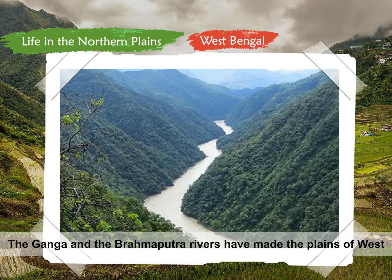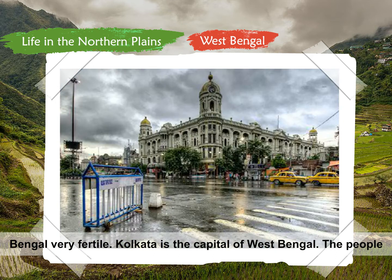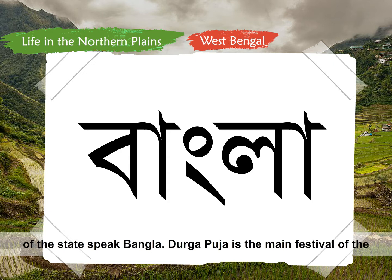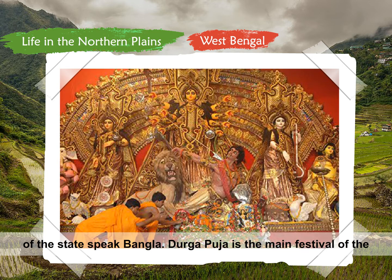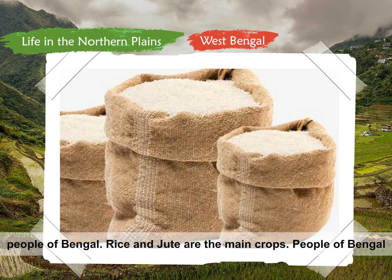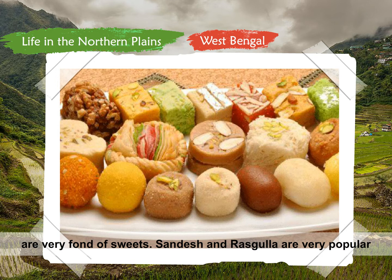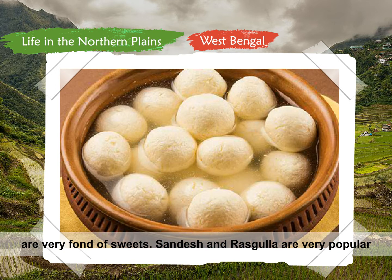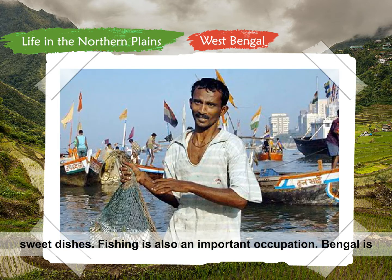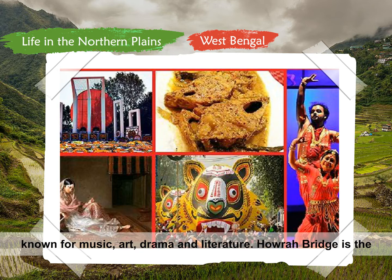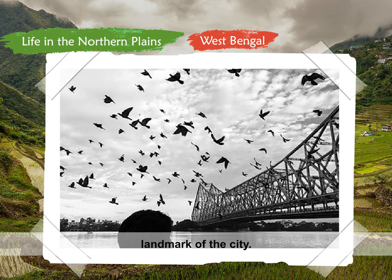West Bengal: The Ganga and the Brahmaputra rivers have made the plains of West Bengal very fertile. Kolkata is the capital of West Bengal. The people of the state speak Bangla. Durga Puja is the main festival. Rice and jute are the main crops. People of Bengal are very fond of sweets — Sandesh and Rasgulla are very popular sweet dishes. Fishing is also an important occupation. Bengal is known for music, art, drama, and literature. Howrah Bridge is the landmark of the city.